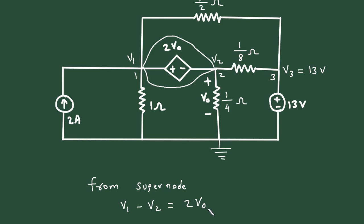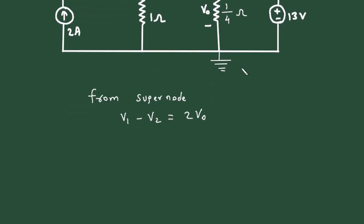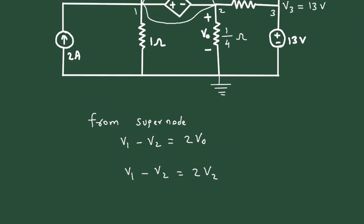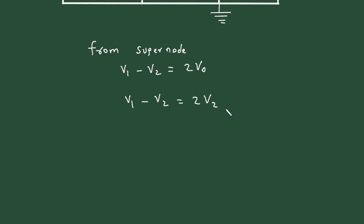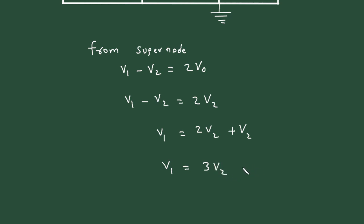V1 minus V2 is equal to 2VO, and here we can see V2 is equal to VO. So we can substitute: V1 minus V2 is equal to 2V2. Instead of VO we are substituting V2 because V2 equals VO. So it will be V1 equals 2V2 plus V2, therefore V1 equals 3V2. Let's call this equation number 1.